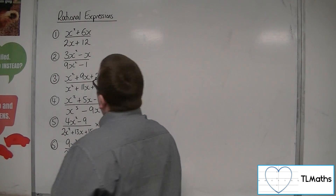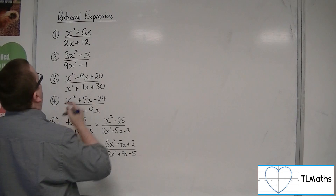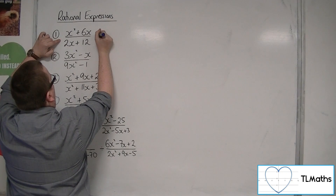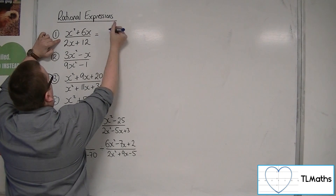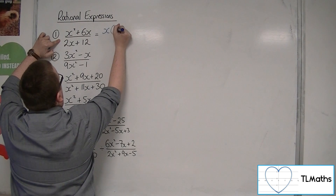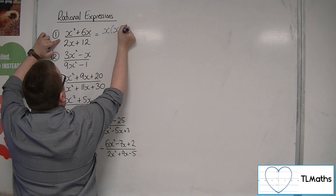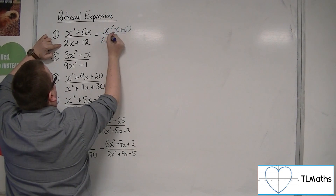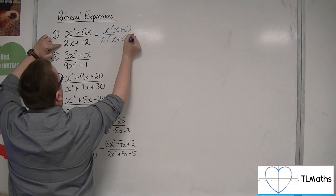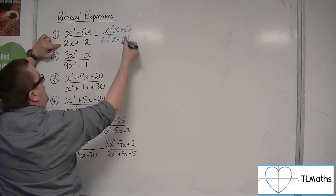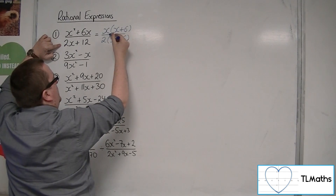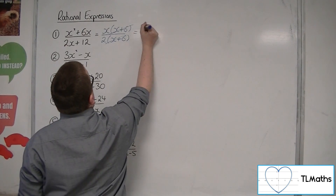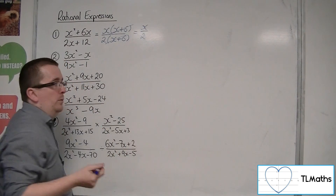with number one, the first thing I would think of doing is factorising the numerator and denominator. So we would have x brought out of a bracket of x plus 6, and 2 brought out of a bracket of x plus 6. We now have a common factor in the numerator and denominator that can cancel, so I'm left with just x over 2.